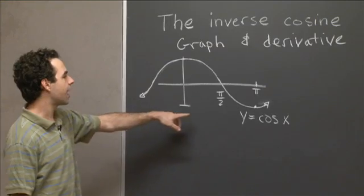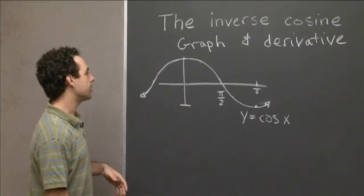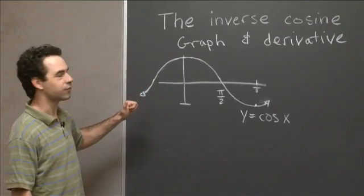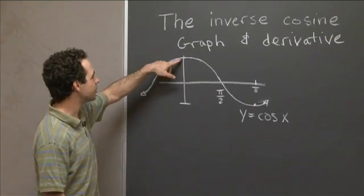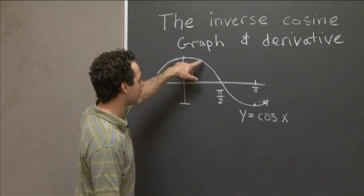So here I have the graph of the curve y equals cosine x. You should have seen this before, I hope. So at x equals 0, it has its maximum value 1. And then to the right, it goes down.